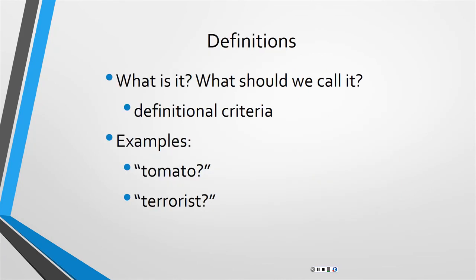The second stasis — the second place where we could have controversy — is over definitions. When we're arguing about definitions, we're asking: what is this thing and what does it mean? When I was a little kid, if someone asked me whether a tomato was a fruit or a vegetable, I would say it's a vegetable. As a six year old, the only place I ever saw tomatoes was in a salad with lettuce and onions and broccoli, so I concluded that tomatoes must be a vegetable. I was then corrected and told that tomatoes are actually a fruit.